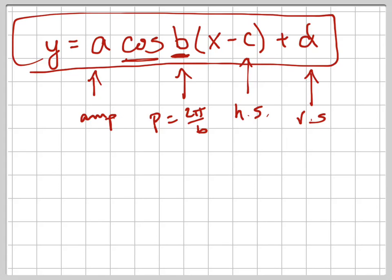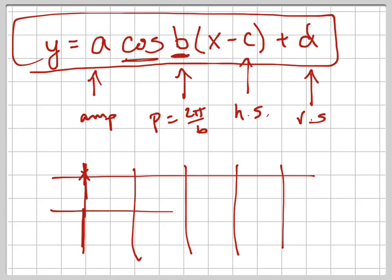Remember, with the cosine graph, we're going to start at the top. So these are my five main points right here: 1, 2, 3, 4, 5. And these are my horizontals right here.